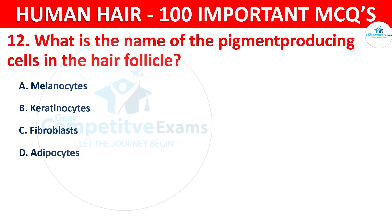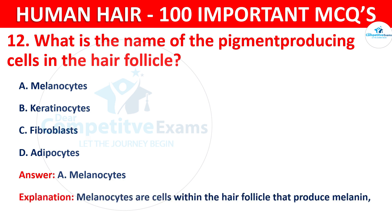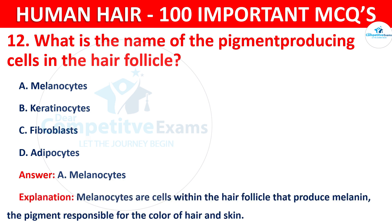The correct answer is A — melanocytes. Melanocytes are cells within the hair follicle that produce melanin, the pigment responsible for the color of hair and skin.